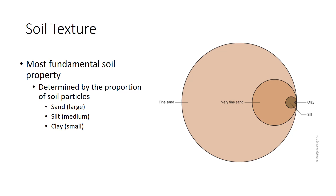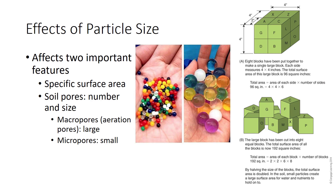Let us first describe why particle size affects these properties. Soil particle size affects two important soil features: specific surface area and the number and sizes of pores. We define specific surface area as the amount of surface area exposed by all the particles in a certain weight of soil. Specific surface area can be thought of as the internal surface area of the soil. The figure uses children's alphabet blocks to demonstrate that the smaller the particles in a soil, the larger the surface area. Because soil contains many small particles, a handful of soil may hold many thousand square feet of internal surface area. Soil surface area is important because reactions occur on the surface of soil particles and because water is held as a film around soil particles. Soils with greater surface area have more total water films.